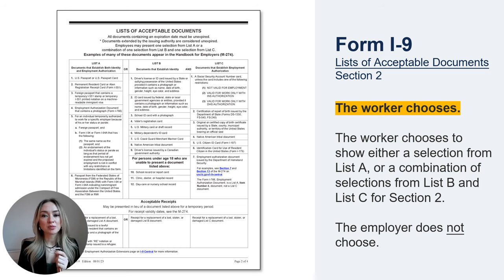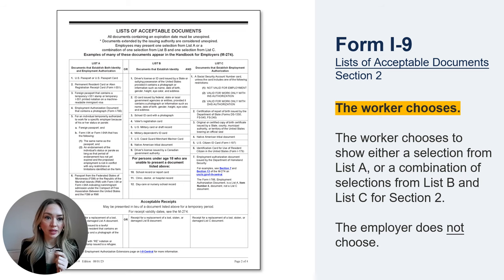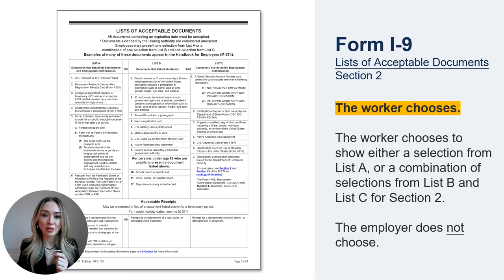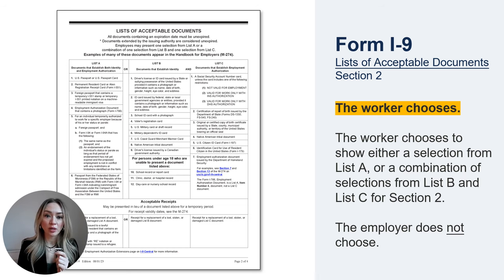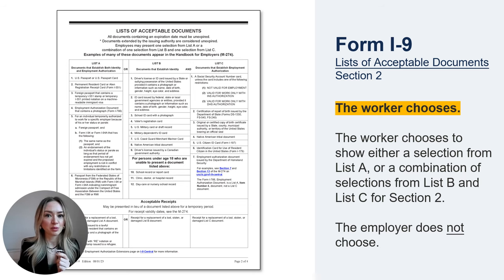Employers and workers can call IER with questions about what documents are acceptable. You can refer to the latest USCIS resources such as the I-9 Central website or the M-274 Handbook for Employers, or call IER's free hotline or USCIS's free employer line. Note that these rules are for verifying identity and permission to work. There are situations where an employer must ask for a specific document, like when a job involves driving duties and a driver's license is required — in that case, the request is for a different reason, not to verify permission to work.